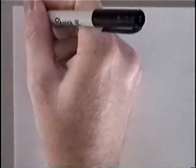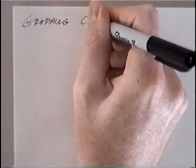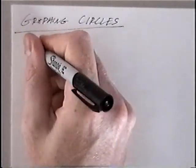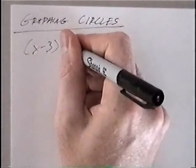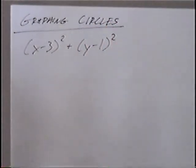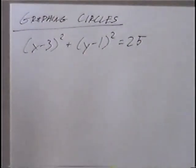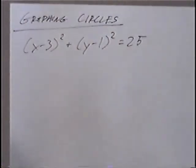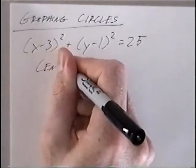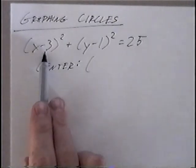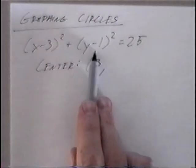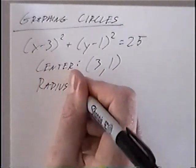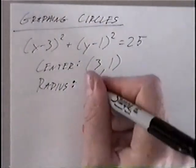The title of the next and last section today is graphing circles. The first equation is (x minus 3) squared plus (y minus 1) squared equals 25. This is in standard form for circles, where you have x and y on the same side both to the second power and it's equal to a number. The center: the x value would be the opposite of the number in the x parentheses, which would be 3, and the y value would be the opposite of the y number, which would be positive 1. And the radius: the number it's equal to, you take the square root of, so the radius would be 5.